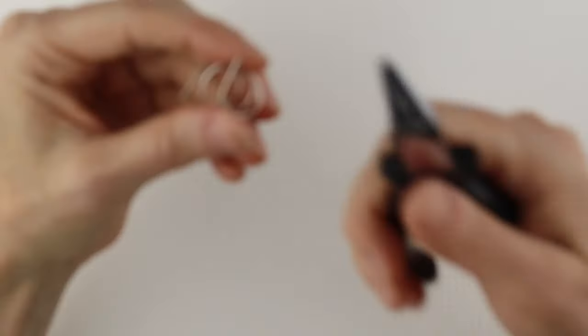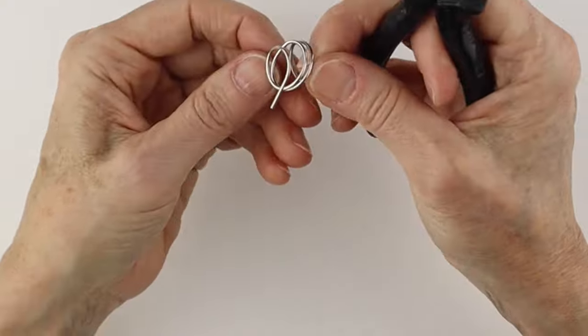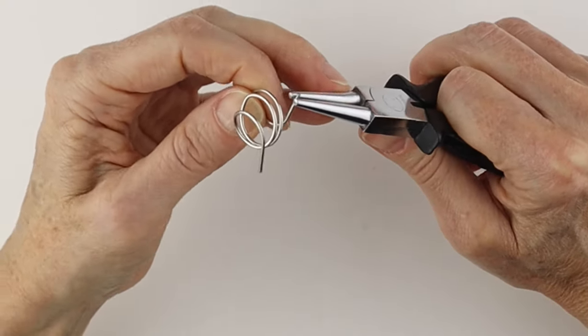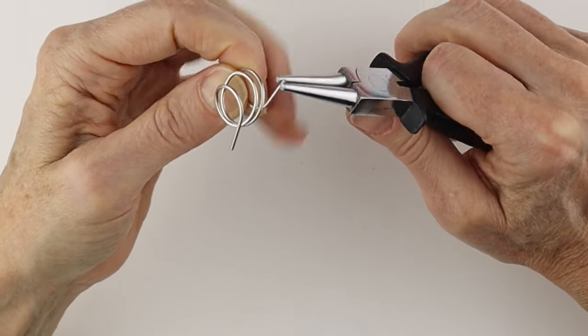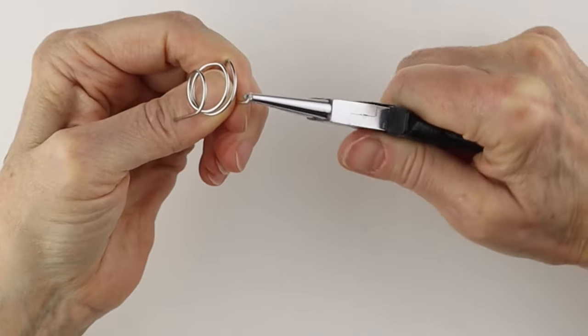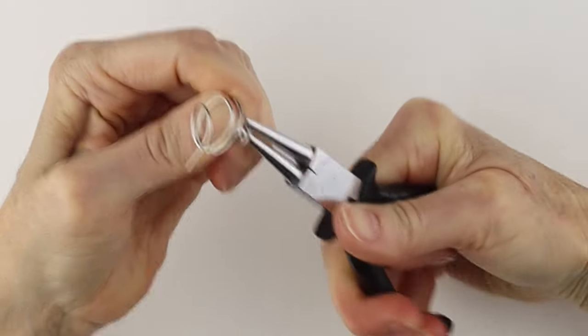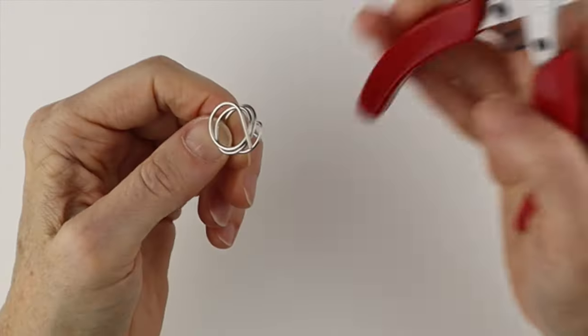We want to take this and roll this around to make a closed loop. Then we can take some smaller round pliers and just work it in.